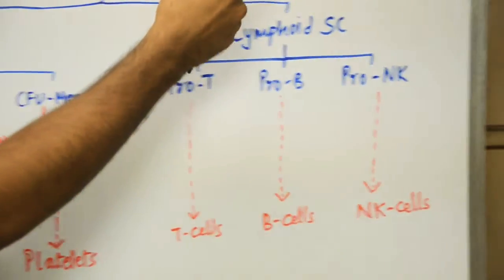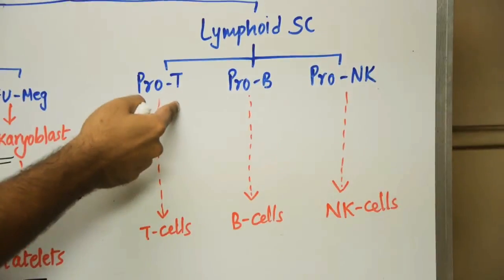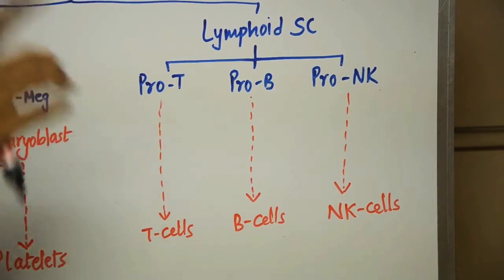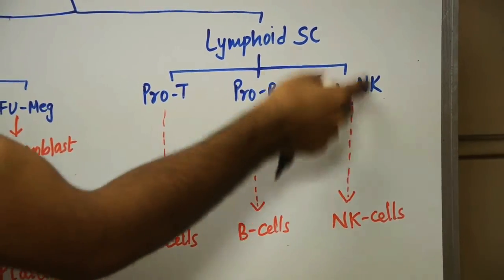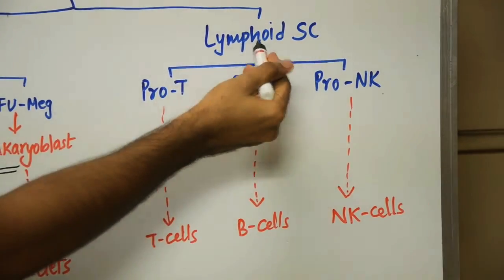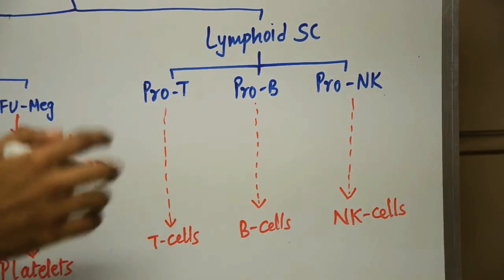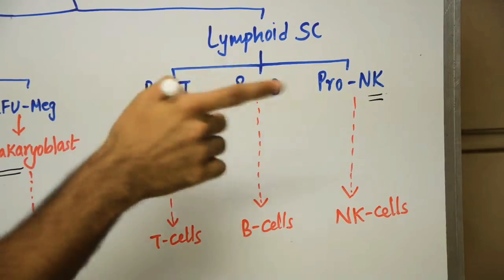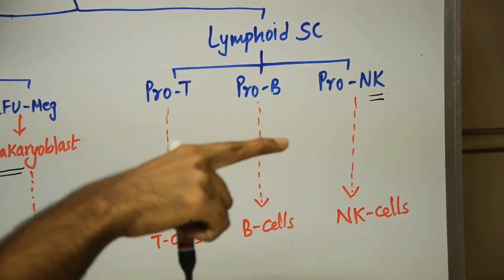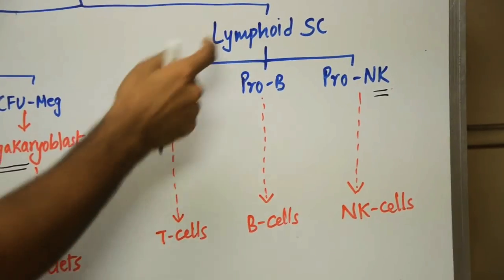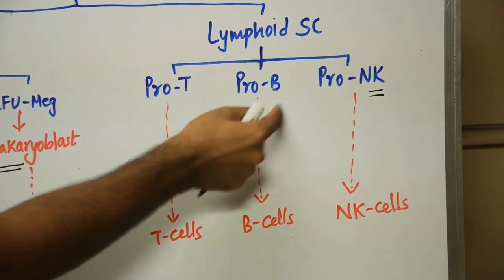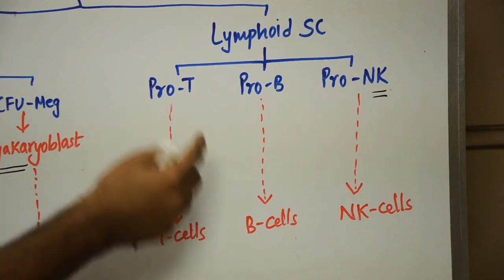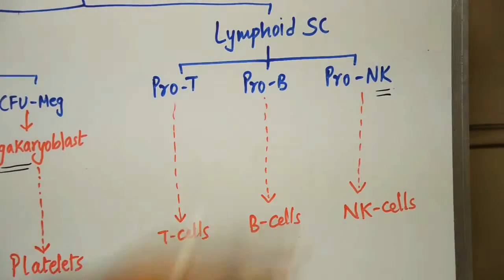Coming to the lymphoid stem cells: lymphoid stem cells give rise to pro T cells, pro B cells, and pro NK cells. NK stands for natural killer cells, which are a type of lymphocyte — neither T cells nor B cells, but a third category of lymphocytes. Pro T, pro B, and pro NK cells, via various intermediates, give rise to T cells, B cells, and natural killer cells respectively.